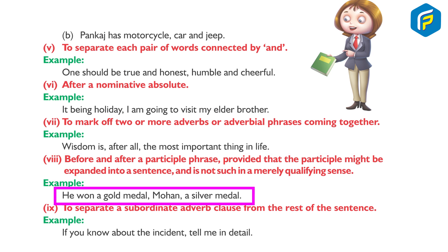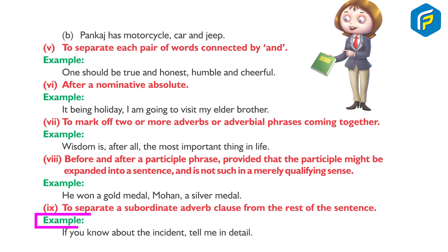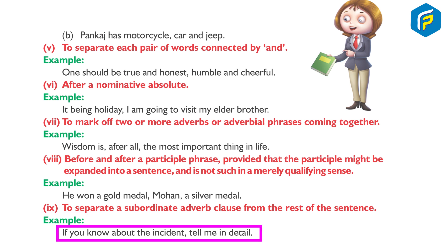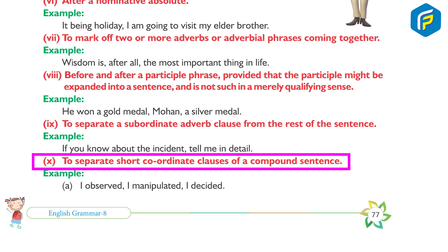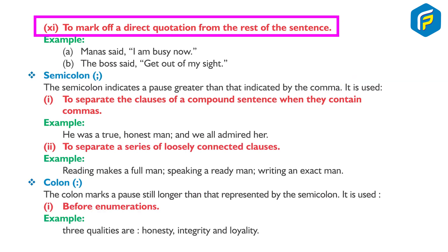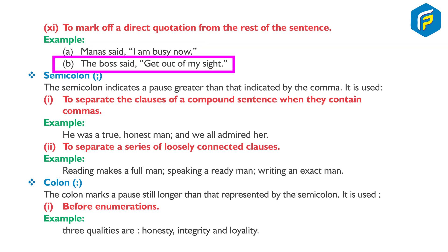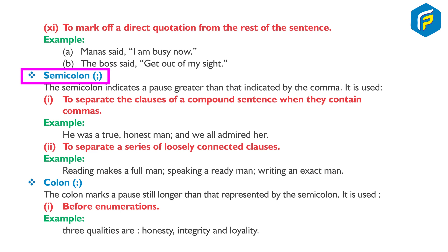Example: He won a gold medal, Mohan a silver medal. Nine, to separate a subordinate adverb clause from the rest of the sentence. Example: If you know about that incident, tell me in detail. Ten, to separate short coordinate clauses of a compound sentence. Example: I observed, I manipulated, I decided. Eleven, to mark off a direct quotation from the rest of the sentence. Example: Manas said, 'I am busy now.' The boss said, 'Get out of my sight.'